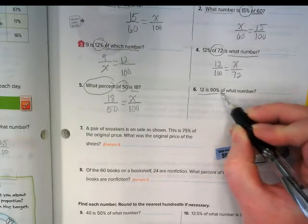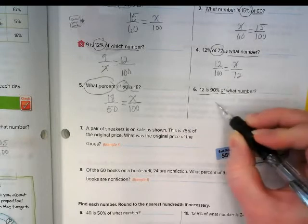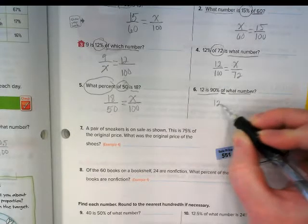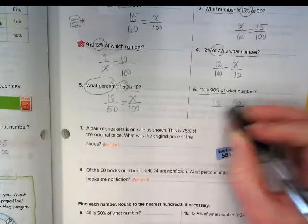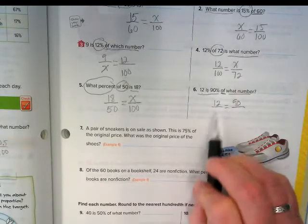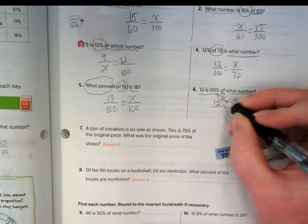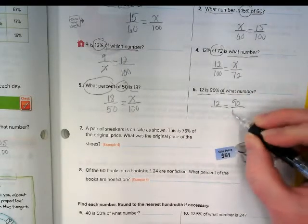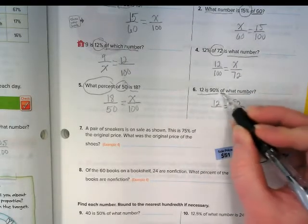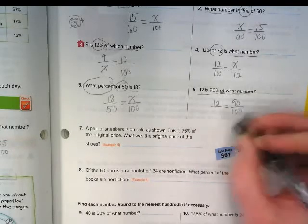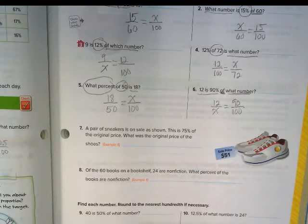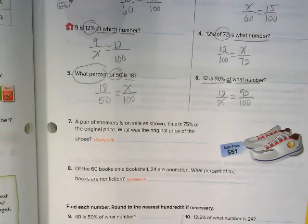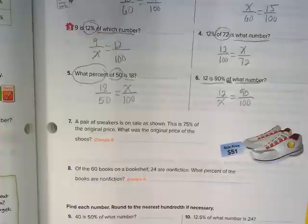This one is interesting because it starts with a number. And where I see the 'of', that's the question. So 9 is 12% of which number? That means 9 is my part. X is my whole because it is the question of which number. That's my unknown. And my percent is 12 over 100.